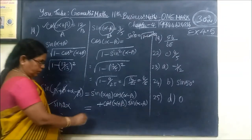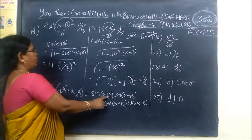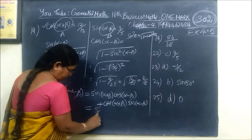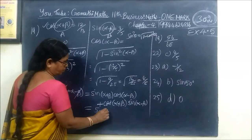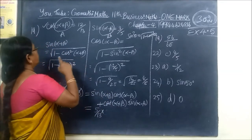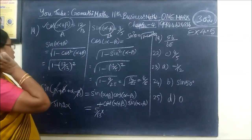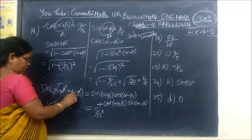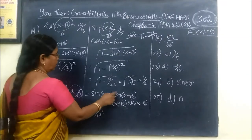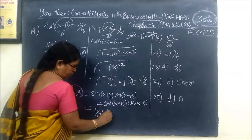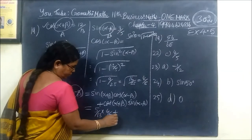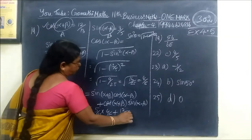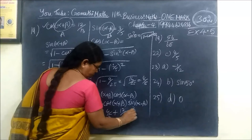This is equal to, this only we want to find. Equal it is, this is our value. Sin of alpha plus beta 5 by 13, then into cos of alpha minus beta, cos of alpha minus 4 by 5. Plus cos of alpha plus beta 12 by 13, sin of alpha minus beta 3 by 5.